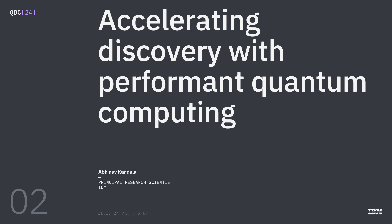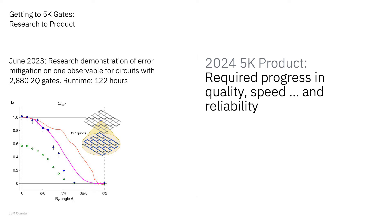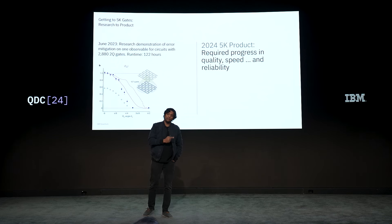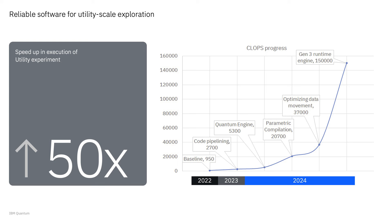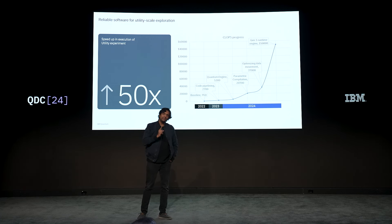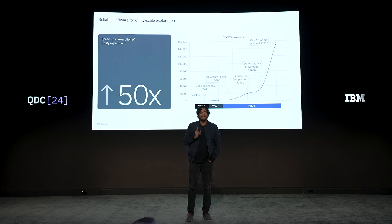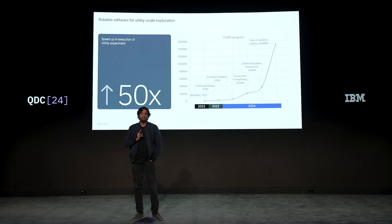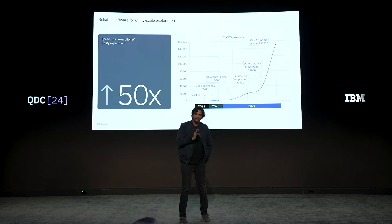Thanks, Jay. I wanted to start with some context: how does one take a research demonstration and turn that into a service capable of reliably executing utility-scale circuits at the 5,000 two-qubit gate scale? This was going to need tremendous progress in the scale, quality, and speed of our systems, but also reliability of our hardware and software stack. What we've done with our software is really driven the reliability of executing large utility-scale workloads while simultaneously improving the speed of circuit execution.